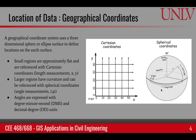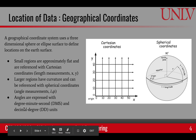Longitude and latitude are typically symbolized with lambda and phi. These are angular measurements, whereas Cartesian coordinates use length measurements. Spherical coordinates are typically measured with two units: degree, minute, second (DMS), and decimal degree.